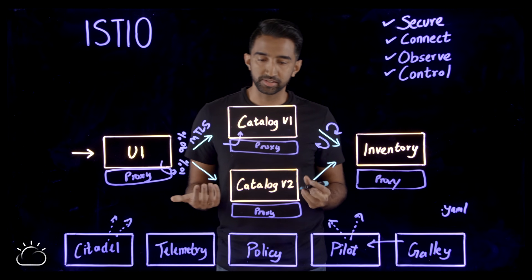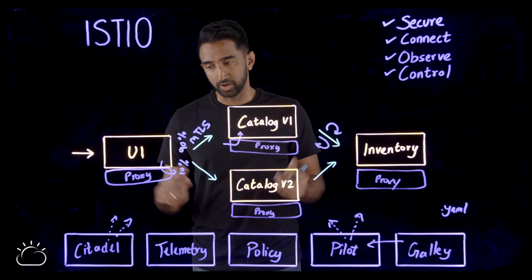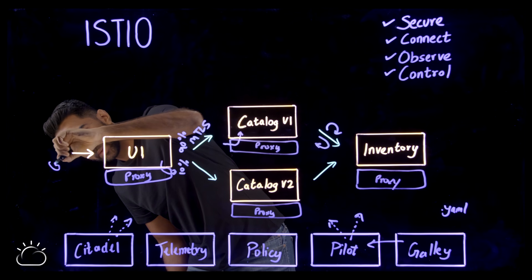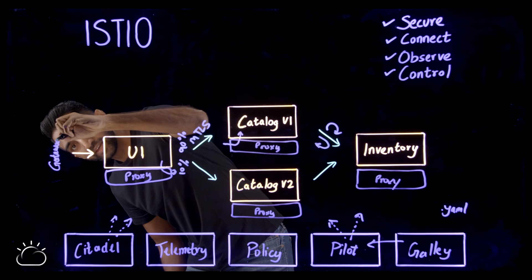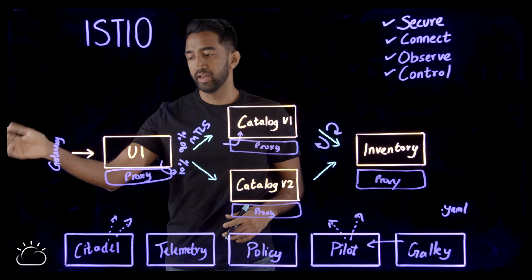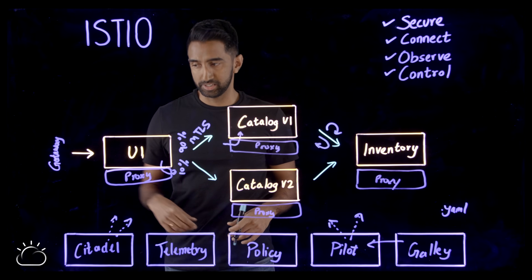To get started with Istio and to configure Istio, there are three main resources that you need to learn about. First, there is a gateway. Gateway is like a load balancer that sits at the edge of your mesh and accepts incoming and outgoing HTTP and TCP connections.